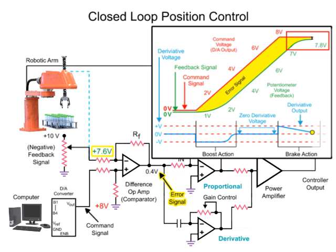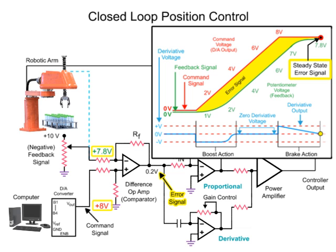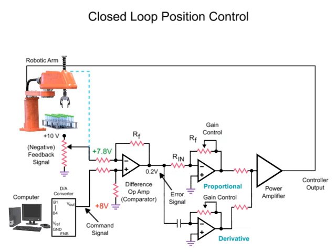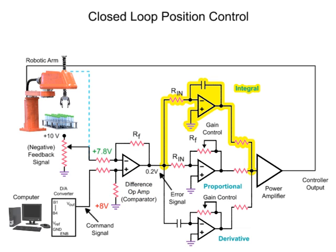Friction and mass of the robotic arm contribute to the system negatively, where the robotic arm fails to reach the desired position. With a reduced error signal due to feedback voltage and command voltage not being equal, a steady-state error condition exists. In this condition, the difference op-amp creates a steady voltage and the arm continues to move. To overcome the steady-state error, an integral amplifier is added to the circuit.